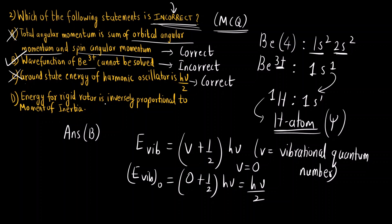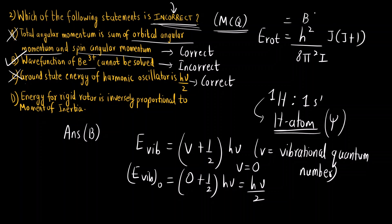Last one, energy for a rigid rotor is inversely proportional to moment of inertia. Let us first write down the formula for energy for a rigid rotor that is rotational energy is h²/8π²i times j(j+1).